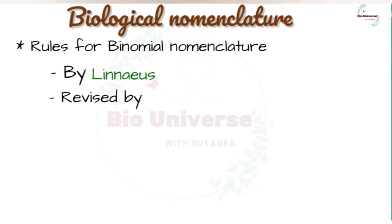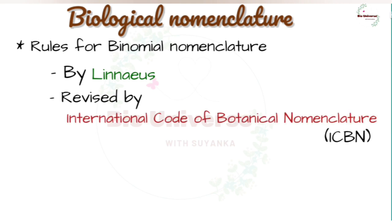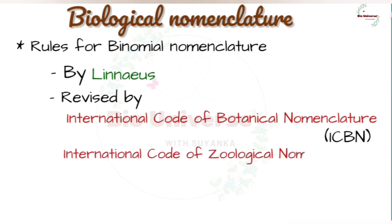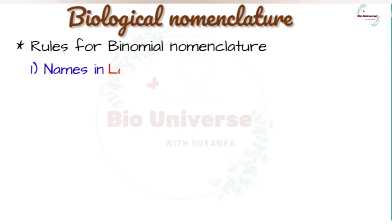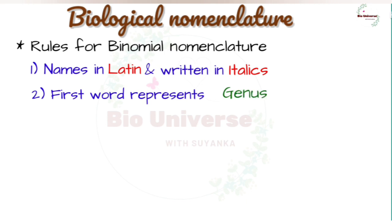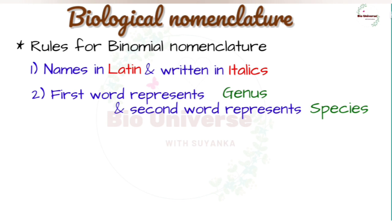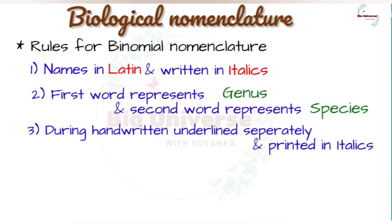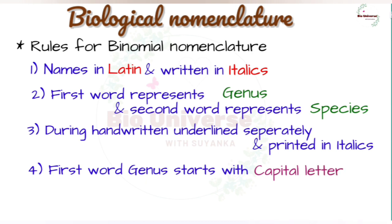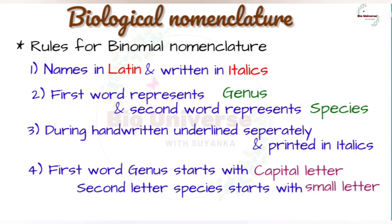The rules were revised in the 19th and 20th centuries through the International Code of Botanical Nomenclature and the International Code of Zoological Nomenclature. The important rules are: biological names are generally in Latin and written in italics, or Latinized irrespective of their origin. The first word represents the genus and the second denotes the specific epithet. When handwritten, both words are separately underlined, or printed in italics to indicate their Latin origin. The first word denoting the genus starts with a capital letter while the specific epithet starts with a small letter, as illustrated with Mangifera indica.